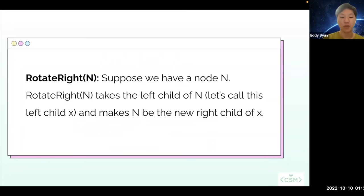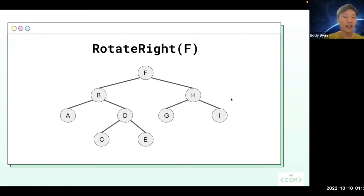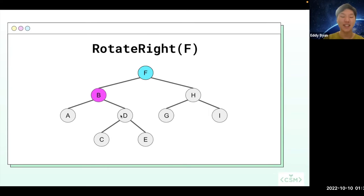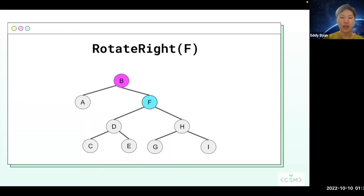The next operation I want to talk about is the rotate right operation. So again, suppose we have a node n and we call rotate right on n. What that's going to do is it's going to take the left child of n — let's call this left child x — and we're going to make n be the new right child of x. So let's go back to this tree. Let's say I call rotate right on f. What I'm going to do is we're going to get f's left child, which is b, and we're going to make f be the new right child of d. And again, b's current right child, which contains a subtree of d, c, and e, can now be the new left child of f. And that's again a safe operation because the nodes d, c, and e — this subtree — is already to the left of f. So this is what it looks like when we call rotate right on f.